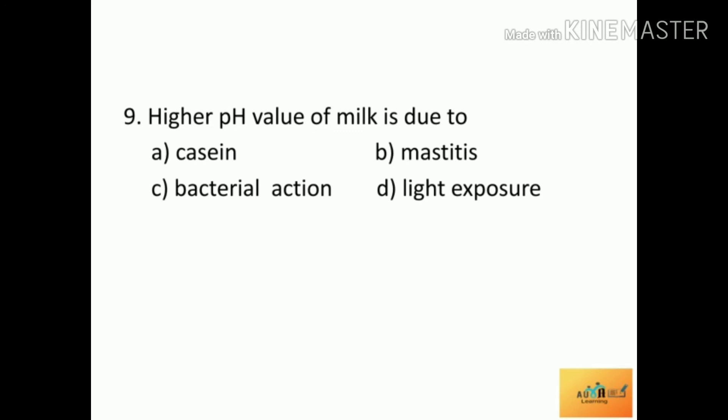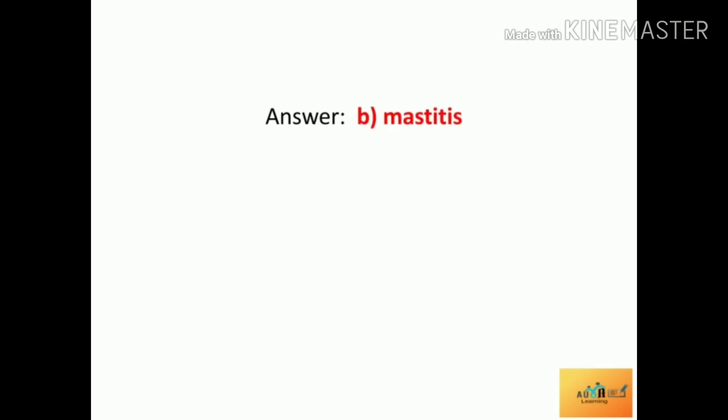Next question: Higher pH value of milk is due to — Option A: casein, Option B: mastitis, Option C: bacterial action, Option D: light exposure. The correct answer is mastitis.